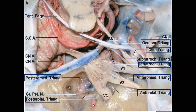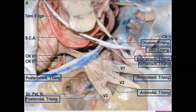The middle meningeal artery passes through the foramen spinosum. It enters the cranial cavity through the foramen spinosum within the posterolateral triangle. If you drill this Glasscox posterolateral triangle, you will enter into the infratemporal fossa. Then there is the posteromedial triangle, also called Kawase's triangle — the Kawase's approach is concerned with the anatomy of this posteromedial triangle.